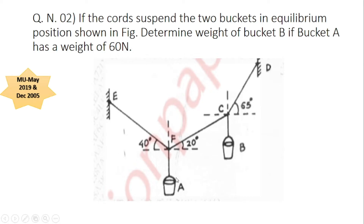Bucket A is connected to joint F. From joint F there is a string connected at point E and one more chord connected at point C. The angle of every chord is given. The next bucket B is connected to joint C. Point C is also connected to point F and to point D. All the angles are given with respect to the x-axis.